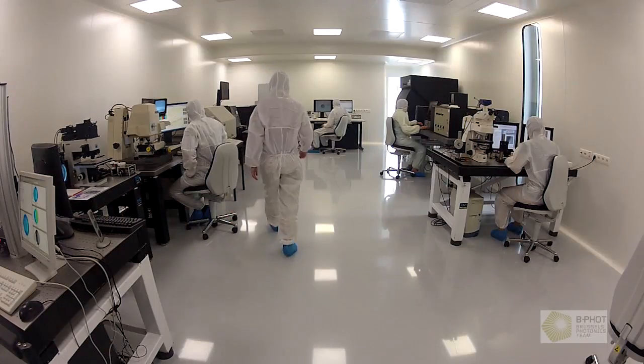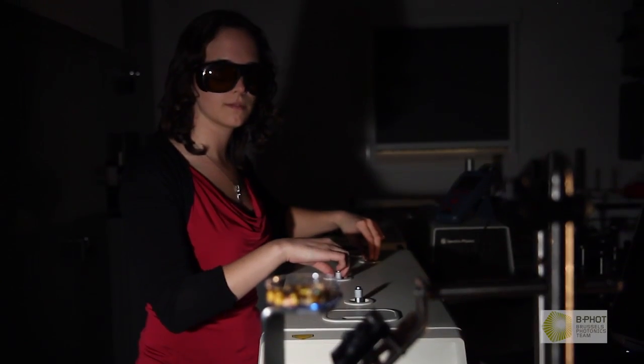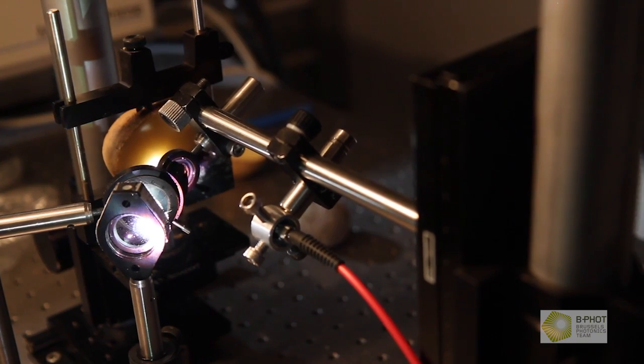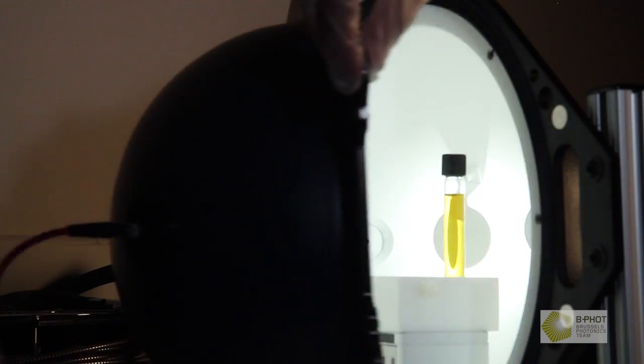Over the past 20 years, the Brussels Photonics team of the University Brussels VUB has been investigating how photonics or light technology can be used to distinguish between good and bad products with incredible speed and accuracy.